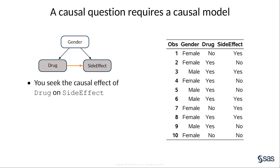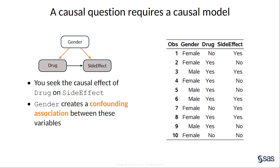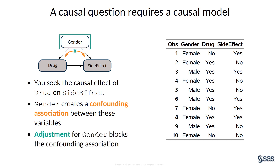In this case, you are interested in the causal effect of the drug on the side effect. You might assume gender plays a causal role in determining who receives the drug — say, men are more likely to take the drug than women. You might also assume gender plays a causal role in determining who reports the side effect — perhaps men are more likely to report it. Thus, gender creates confounding association between the variables of interest. This confounding association is removed when you stratify the analysis by gender, thus adjusting for the confounding common cause.